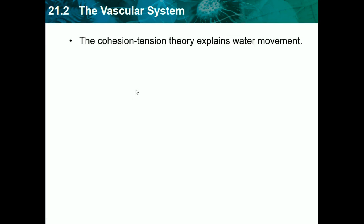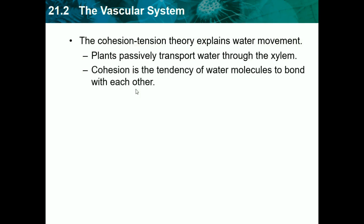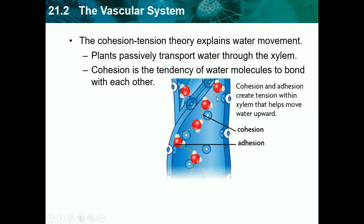The cohesion-tension theory explains water movement. Plants passively transport water through the xylem, so it always happens. Cohesion is the tendency of water molecules to bond with each other. Adhesion is the tendency of water molecules to bond with other substances. If you have water on a table, you'll notice they bead up into little balls — that would be cohesion. Cohesion and adhesion create tension within the xylem that helps move water upwards.